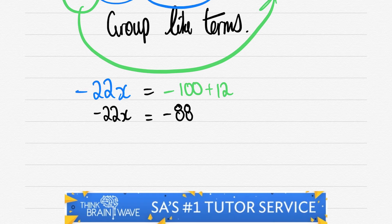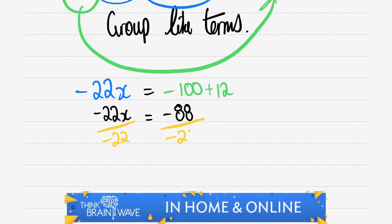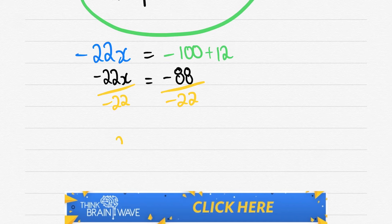We now divide both sides by -22 to isolate the x value. We then get x = 4.